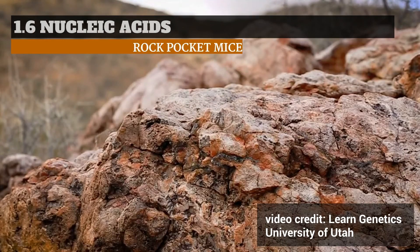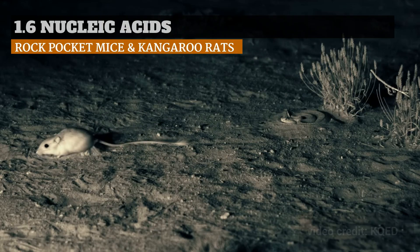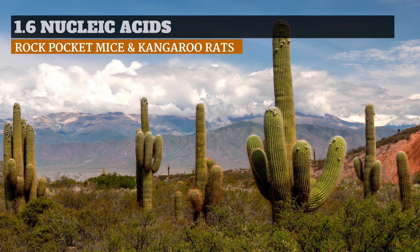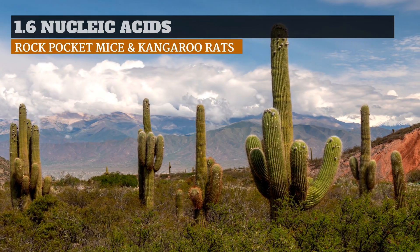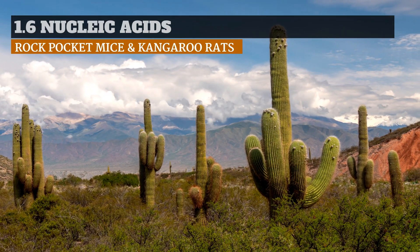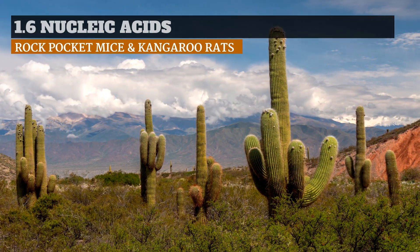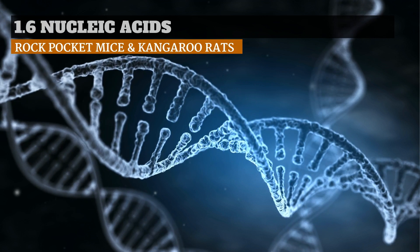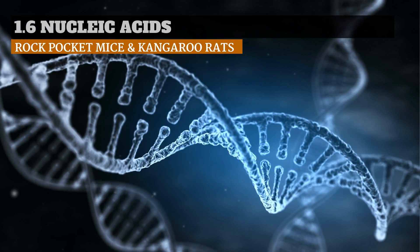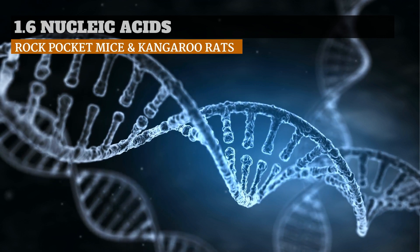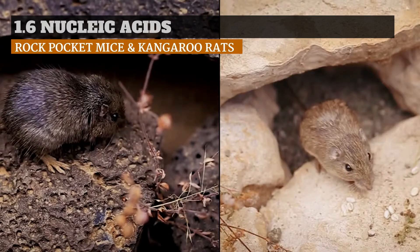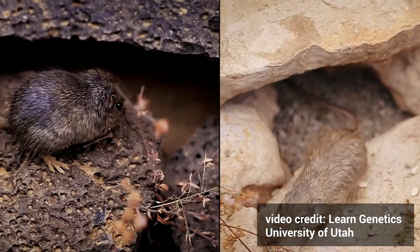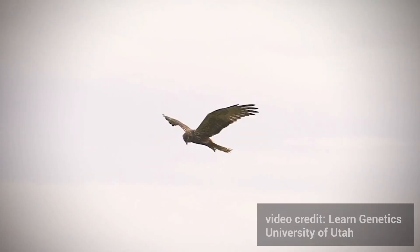Rock pocket mice and kangaroo rats live in the harsh desert climate of the American Southwest. Amazingly, information stored in a molecule so simple that many scientists doubted it could play an important role in heredity holds the secret to genetic variation, which allows these animals to adapt and thrive in their challenging environment.